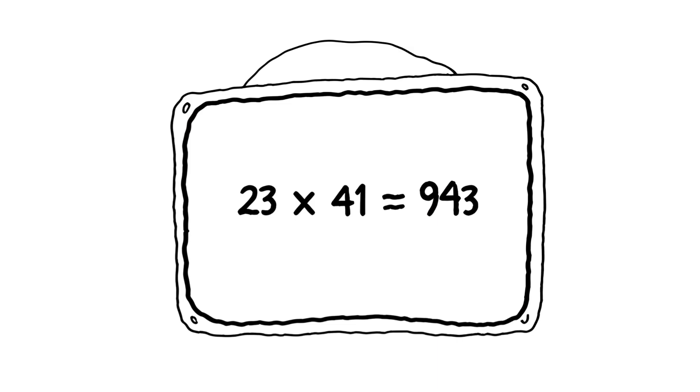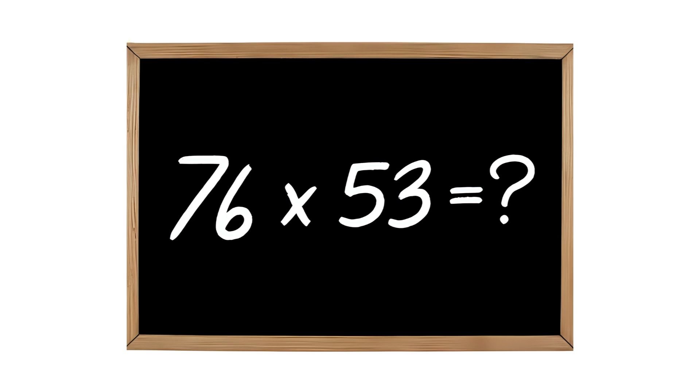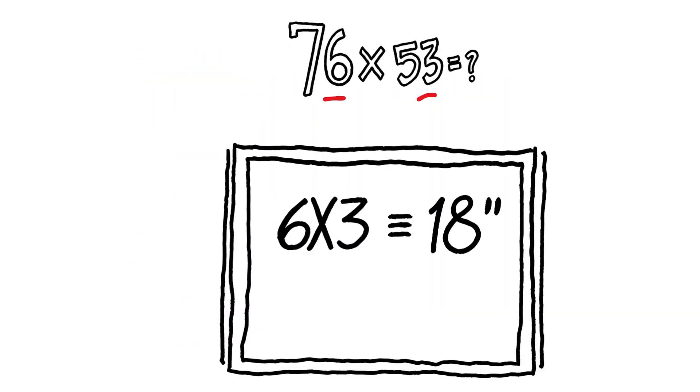Let's try one more a little faster to show you how easy it is. What about seventy-six by fifty-three? Ones digits: six times three is eighteen. Write down eight, carry the one.